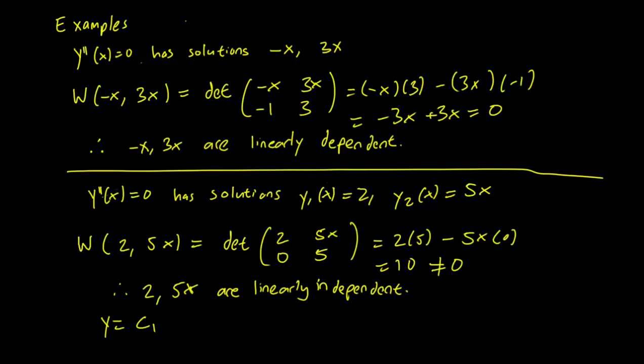And this means that the general solution for y''(x) equals 0 can be written down as y equals c1 times 2 plus c2 times 5x is the general solution to this differential equation.